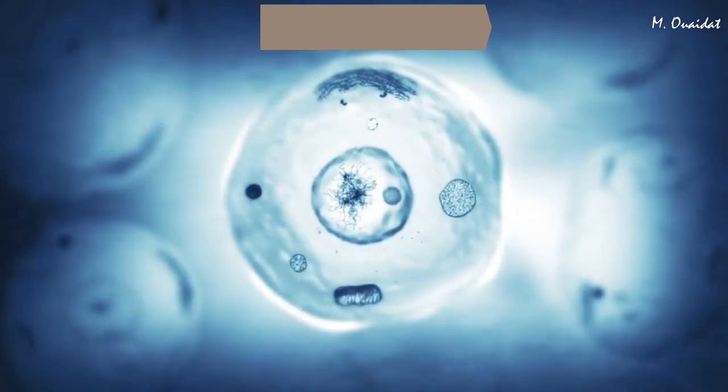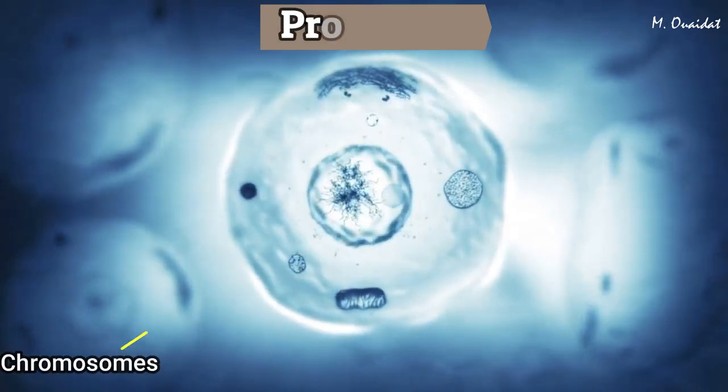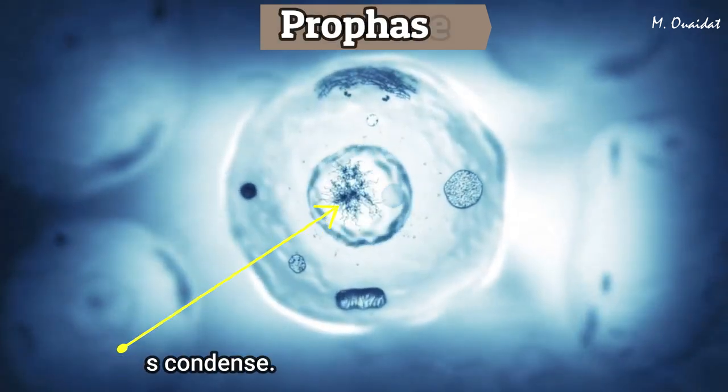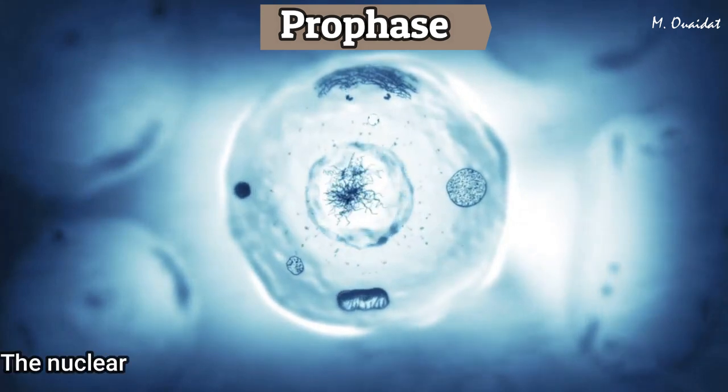In prophase, the chromosomes begin to condense. The nuclear membrane and the nucleolus disappear.